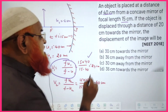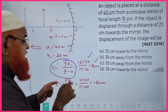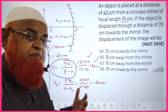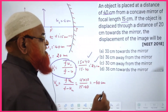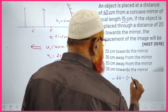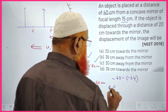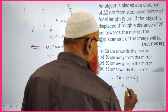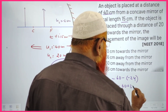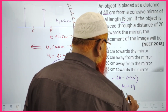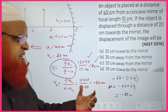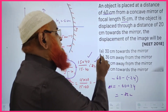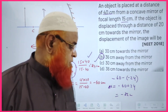For u1 = 40: v1 = (15 × 40)/(15 − 40) = 600/(−25) = −24 centimeters. For u2 = 20: v2 = (15 × 20)/(15 − 20) = 300/(−5) = −60 centimeters. The net displacement of the image is Δv = −60 − (−24) = −36 centimeters. The negative sign indicates the image has been shifted away from the mirror. The answer is option B.